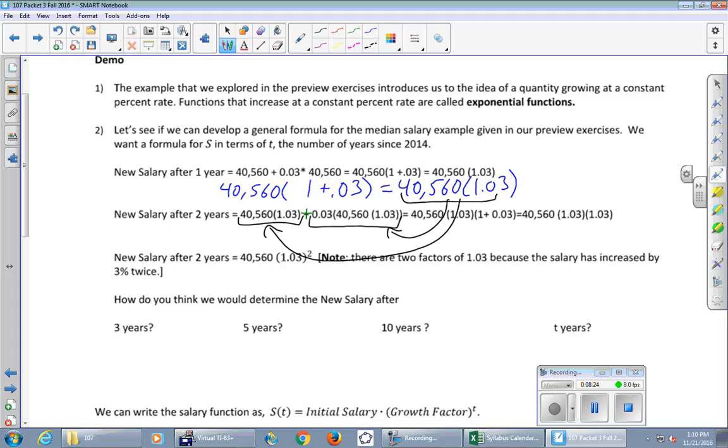This would be a whole lot easier for us if we just smushed the numbers together and did the arithmetic. But if we leave it in this form, something good happens. What can I factor out? Here's a plus sign in the middle. What can you factor out from both of the terms? There is a 1.03. Anything else? And the 40,560. Do we see that that is all underlined in here? There's a 40,560, 1.03 and a 40,560, 1.03. And so we can factor those two things out.